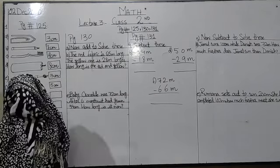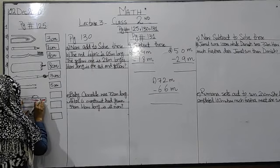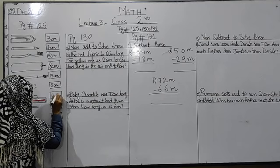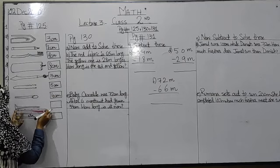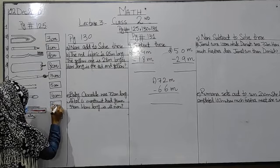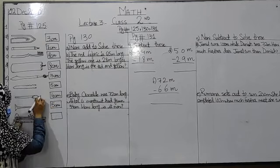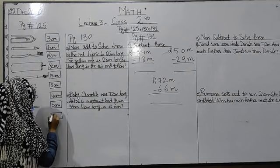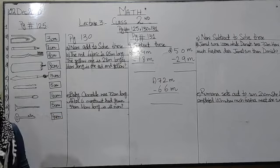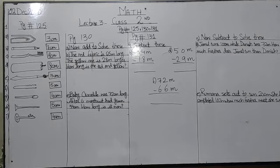Match box ki match ko measure karein — wo 4 cm hai. Keel ko measure karein — yeh bhi pin ke jitna hai, 5 cm. Chaabi jo hai wo matchbox ki match ke jitni hai, to wo bhi 4 cm aayegi. Yeh measurements aapne khud apni copy books pe jo pictures bani hain unpe scale rakhke measure karke un boxes mein likhni hain. Yeh activity aap logon ne lazmi kar leni hai.